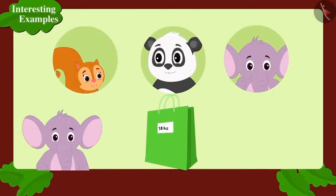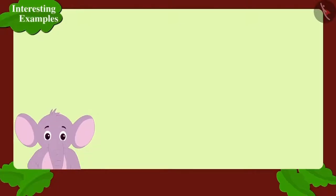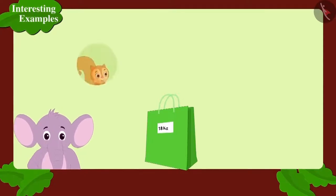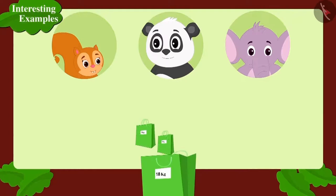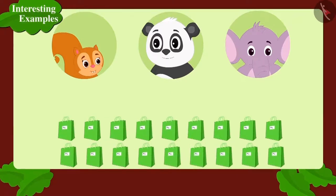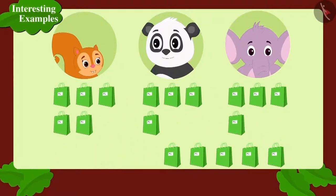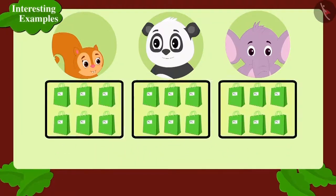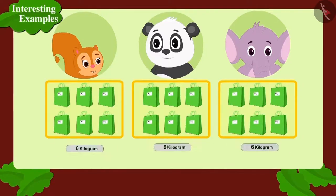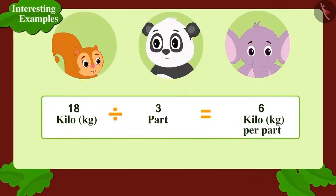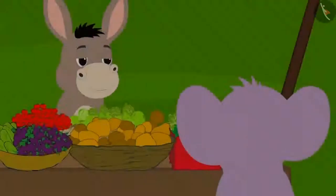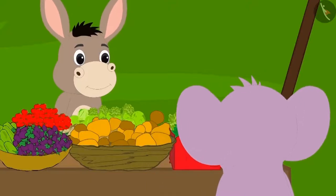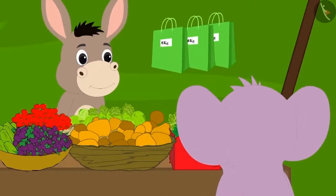Children, can you help Appu? Into how many equal parts does Appu have to divide the 18 kg potatoes? Suppose there are 18 one-kg bags of potatoes. If we divide 18 into 3 equal parts, how many potatoes will each part have? Each part will have 6 kg. Appu will have to give 6 kg each of potatoes to Chanda and Golu.